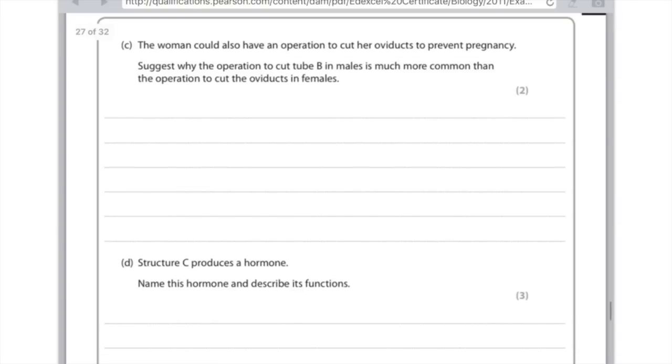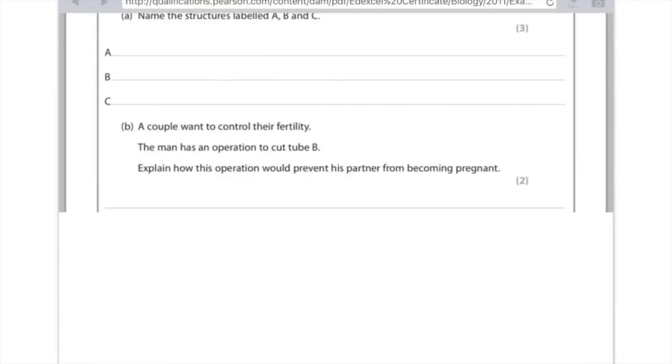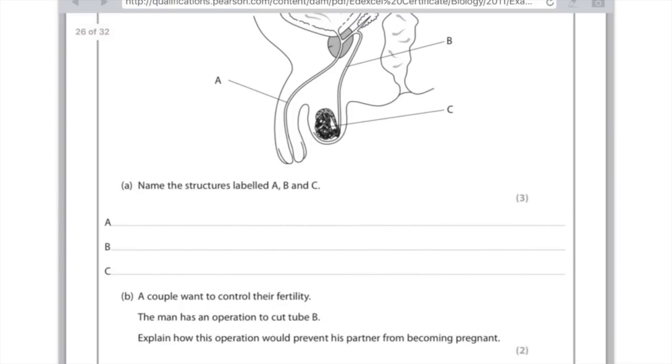Structure C produces a hormone, name this hormone, describe its functions. Okay that's the testicles, so the hormone it's produced sounds like testicles so it's testosterone. And the various things it does, well it leads to sperm development, it leads to secondary sexual characteristics developing so that's in puberty like men's voices getting deeper, having bigger muscles, broad shoulders that sort of thing and it also develops men's sex drive.